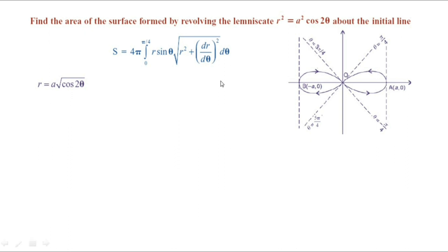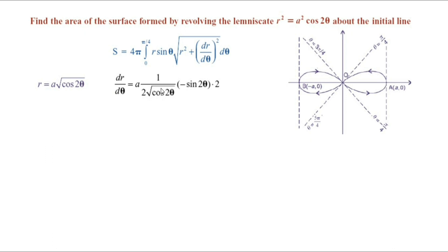Here we need to find the square root of r squared plus (dr/dθ) squared. Given r equals a times the square root of cosine 2 theta, we compute dr/dθ: taking a as constant, the derivative of root cosine 2 theta is 1 over 2 root cosine 2 theta, times the inner derivative of cosine 2 theta, which is negative sine 2 theta times 2. The 2's cancel, giving dr/dθ equals negative a sin 2 theta divided by root cosine 2 theta.